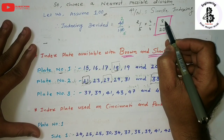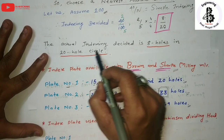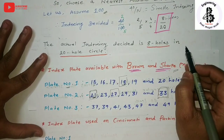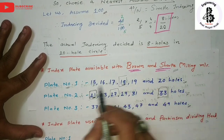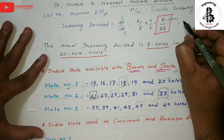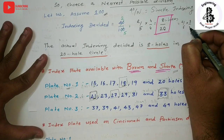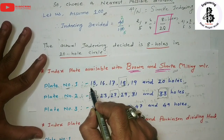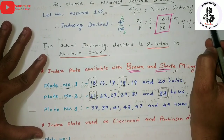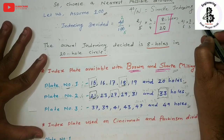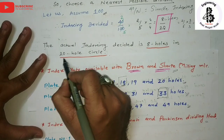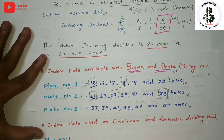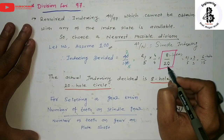Multiplying 2/5 by 4/4 gives 8 by 20, meaning the actual indexing decided is 8 holes in a 20-hole circle system, adopted by the Brown and Sharp system for plate number 1. Alternatively, multiplying 2/5 by 3/3 gives 6 divided by 15 — that is, 6 holes in a 15-hole circle system for Brown and Sharp plate number 1. Multiple answers are available across Brown and Sharp plate numbers 1, 2, and 3. We will take 4/4, giving 8 holes in a 20-hole circle system.